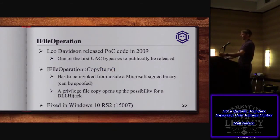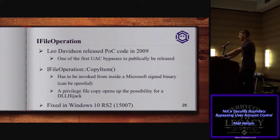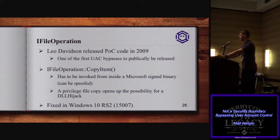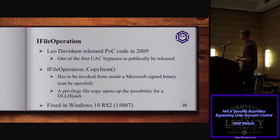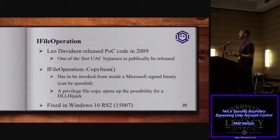The first one is the good old iFileOperation. This is the one that's been around since 2009 — it's been the default one in almost every malware sample that has some sort of module to get around UAC. Created by Leo Davidson back in 2009, it still works on the vast majority of endpoints. Microsoft actually fixed this in Windows 10 RS2 build 15007. Since elevation is not a boundary, they didn't CVE it or push it out in a bulletin — they just added the fix in a new build.